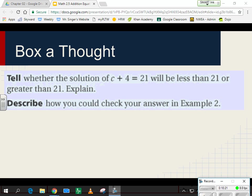All right, go ahead and do your box of thought before moving on. You've got to tell me whether C plus 4 equals 21 will be less than 21 or greater just by looking at it. The hint here is what's the inverse operation with 4? Are you adding or subtracting? Okay. And describe how you can check your answers in example 2. Actually, all of them. I want to know how you can check your answers in all of them. What's the little thing I showed you in example 1?